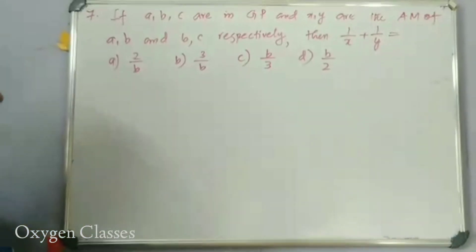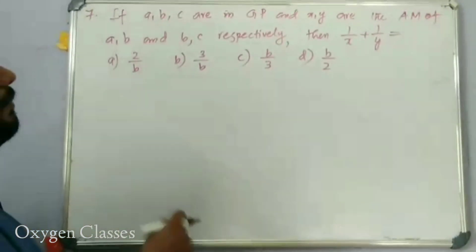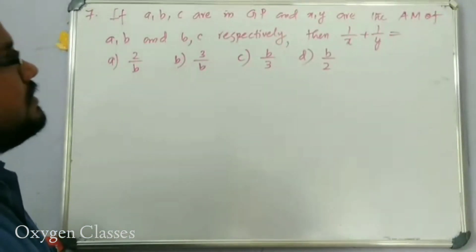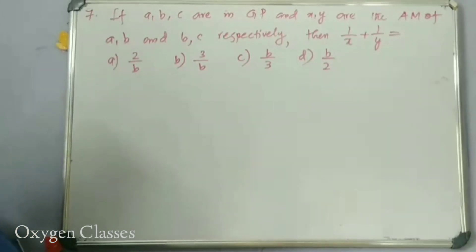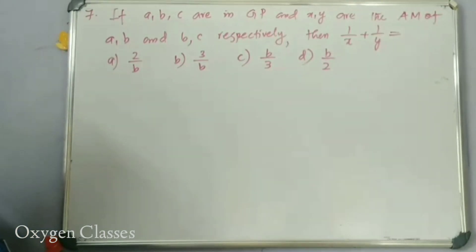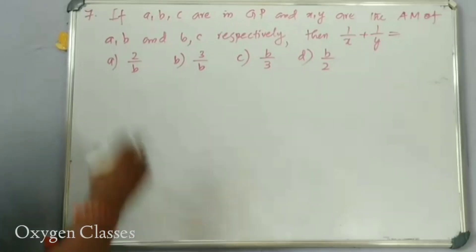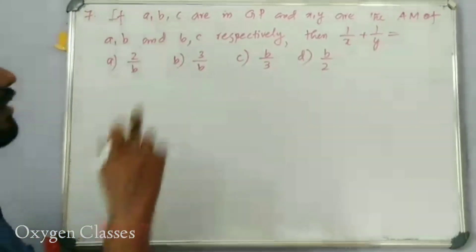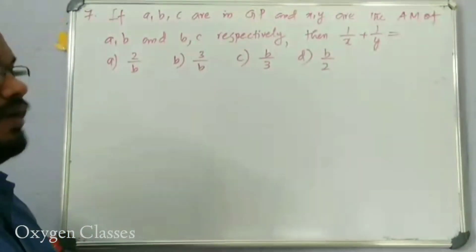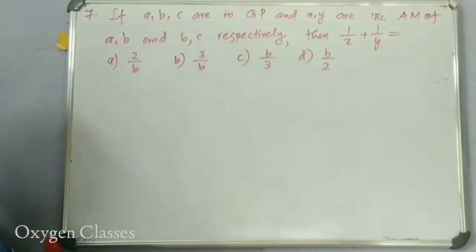If A, B, C, R and G — P and X and Y are the arithmetic mean of A, B and B, C respectively, then 1 by X plus 1 by Y is equal to?